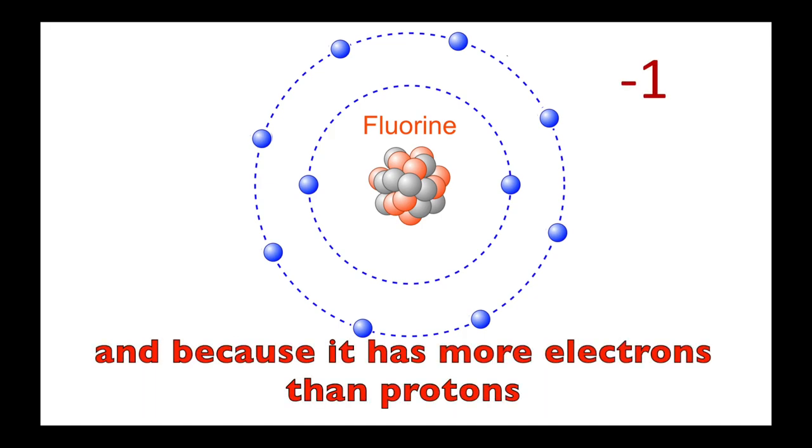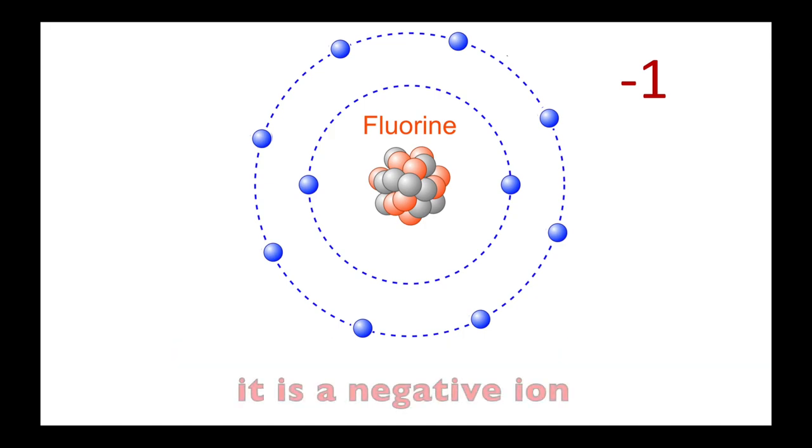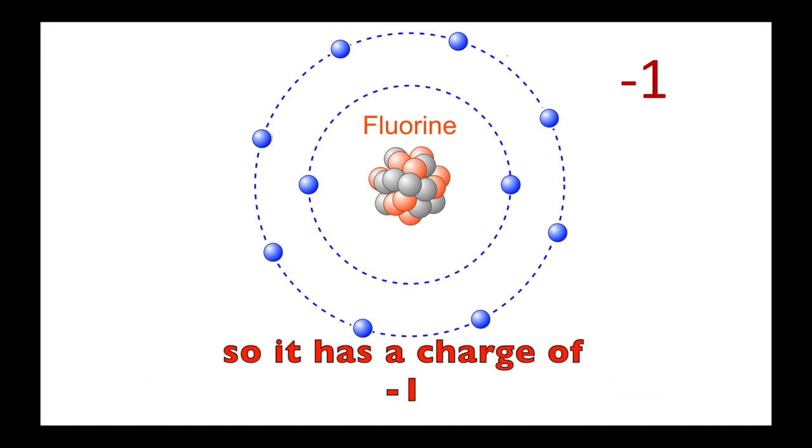And because it has more electrons than protons, it is a negative ion. Fluorine gained one electron, so it has a charge of negative one.